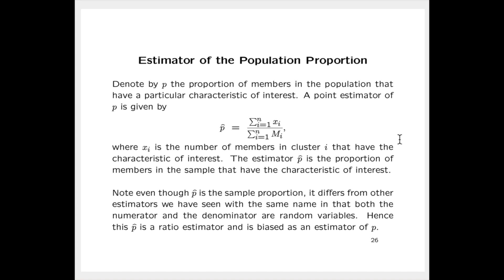Note that even though p-hat is the sample proportion, it differs from other estimators we have seen with the same name in that both the numerator and the denominator are random variables. Hence p-hat is a ratio estimator and is biased as an estimator of p.